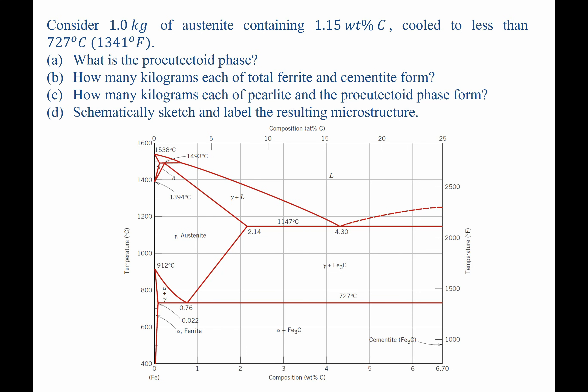For this question, we're told that we begin with one kilogram of austenite, and the initial composition is 1.15 weight percent carbon, which places us somewhere in this region along this line. It says that it's cooled down to less than 727°C. This is the line for 727°C, so that's the eutectoid reaction. Given that information, we're asked the following.